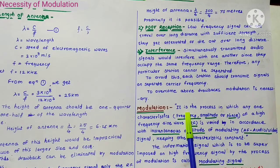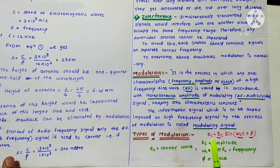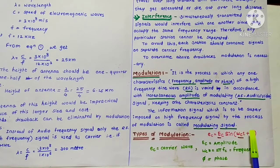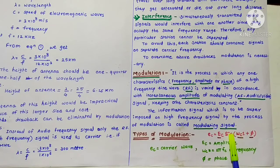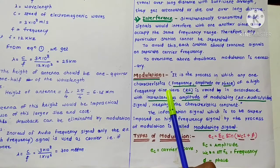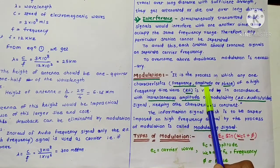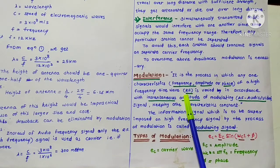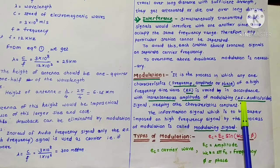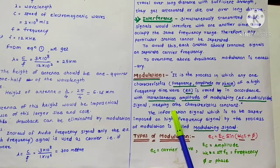Modulation is the process in which any one characteristic of a high-frequency electromagnetic wave is varied. The equation of the electromagnetic wave is given by eC = EC sin(ωCt + φ). This equation gives three characteristics: EC is the amplitude, ωC (= 2πfC) is the frequency, and φ is the phase. Modulation varies any one of these three characteristics — frequency, amplitude, or phase — of the high-frequency radio frequency sine wave.